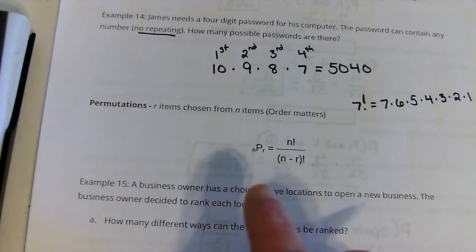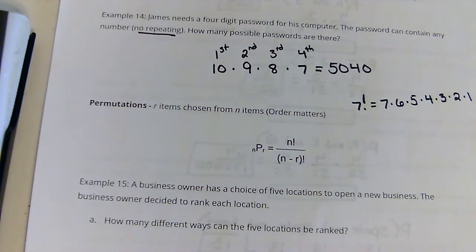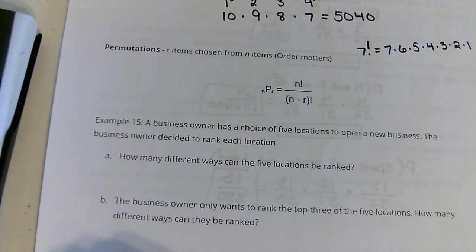Do you see why factorial would come and play with what we're doing after looking at that problem? Let's look at this example. A business owner has a choice of five locations to open a new business. The business owner decided to rank each location.